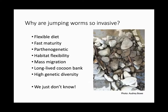What makes jumping worms so invasive? We don't have a definitive answer yet, but they are unique in several ways: they have a very flexible diet, grow extremely quickly, can reproduce parthenogenetically — essentially cloning themselves — are flexible in habitat requirements, have some mysterious mass migration behavior, and have long-lived cocoon banks that can withstand climate extremes. They also have a lot of genetic diversity.